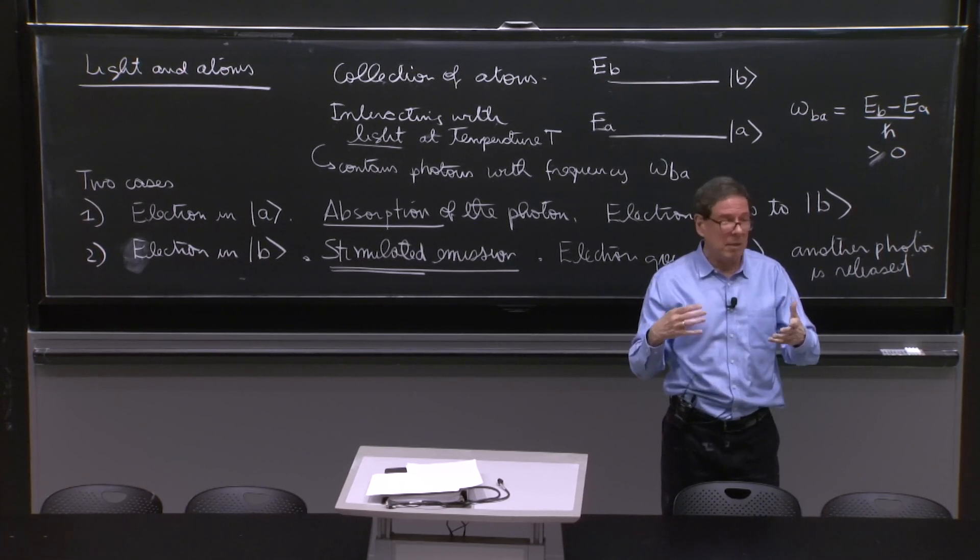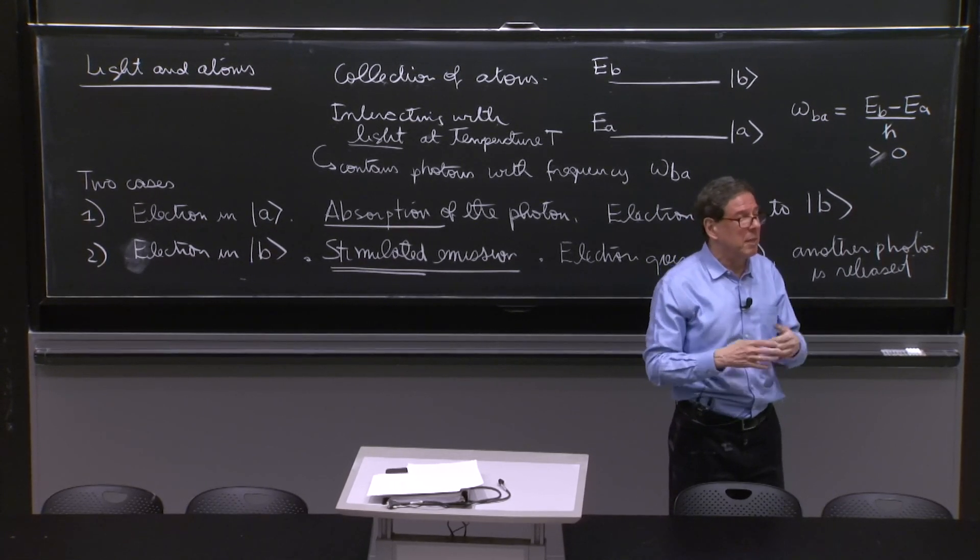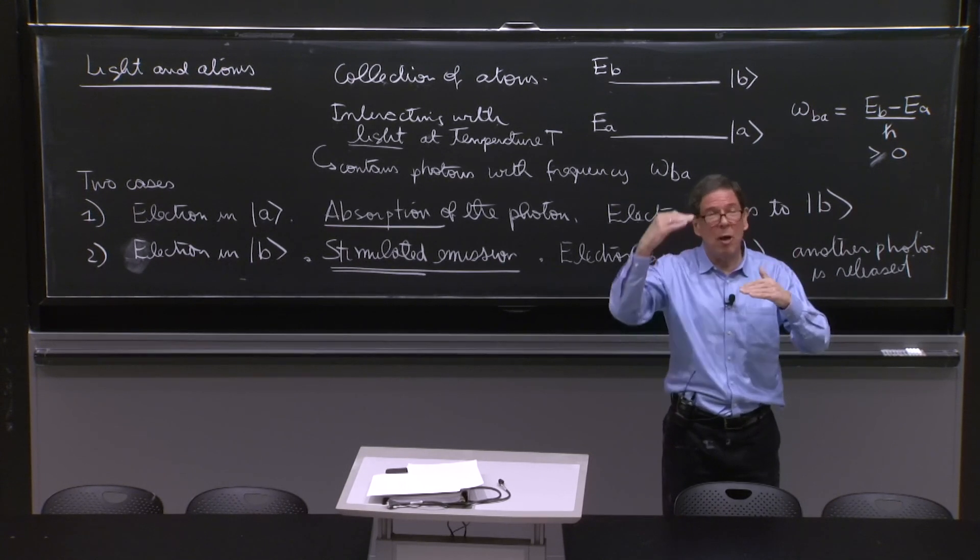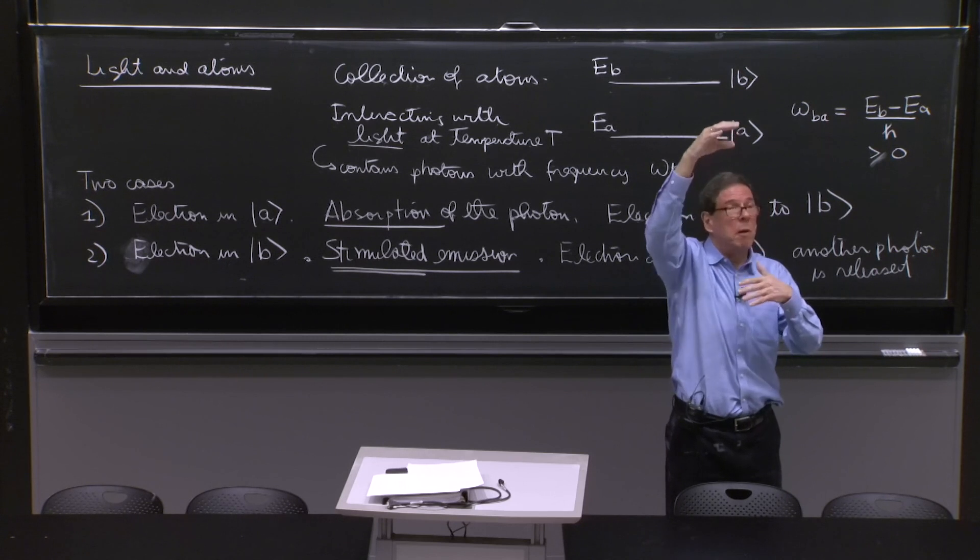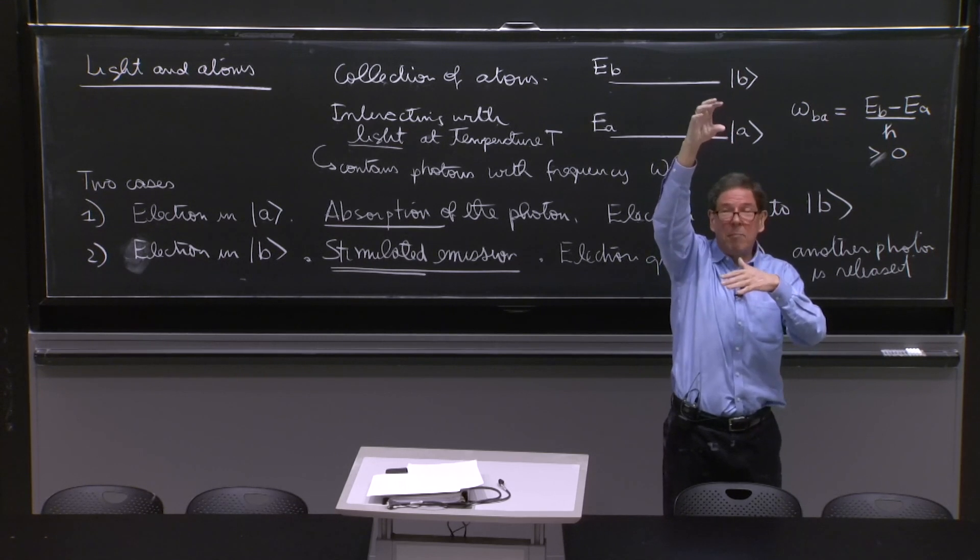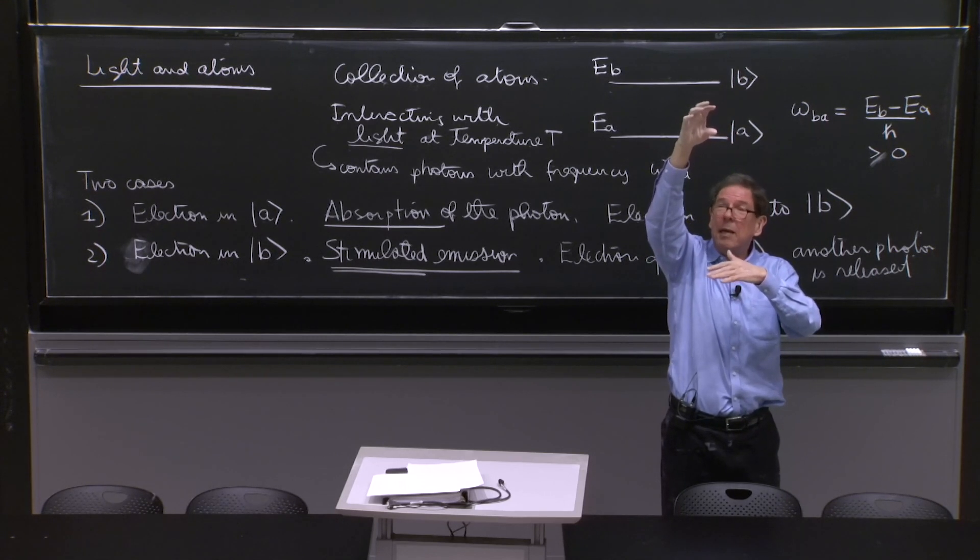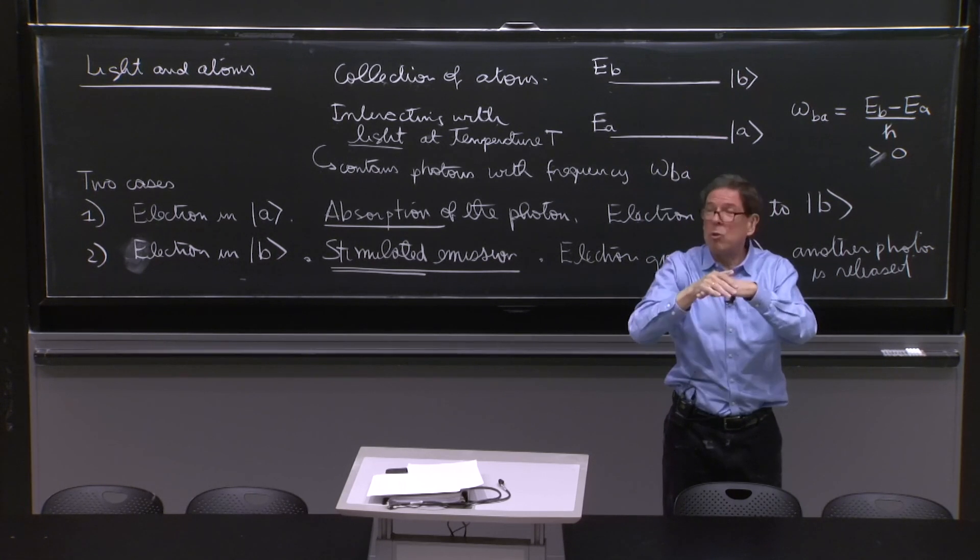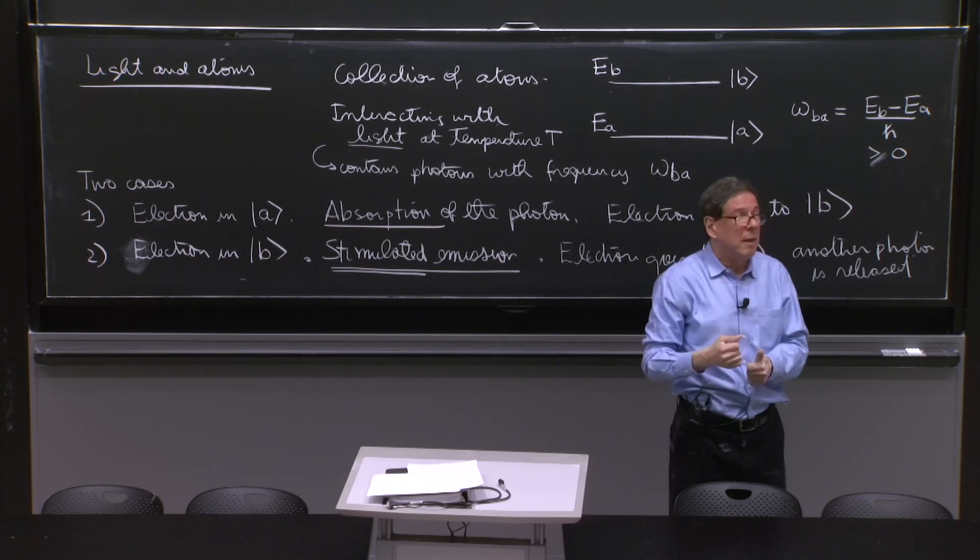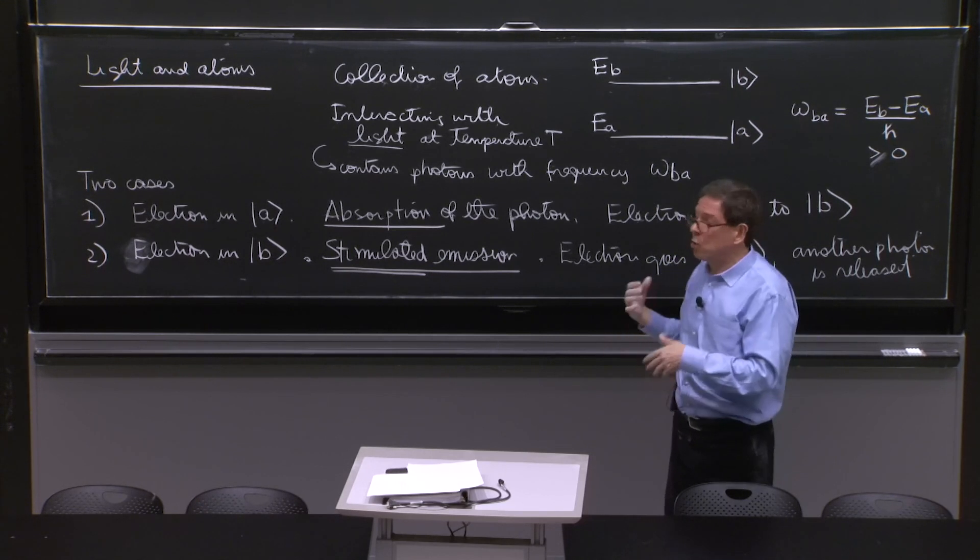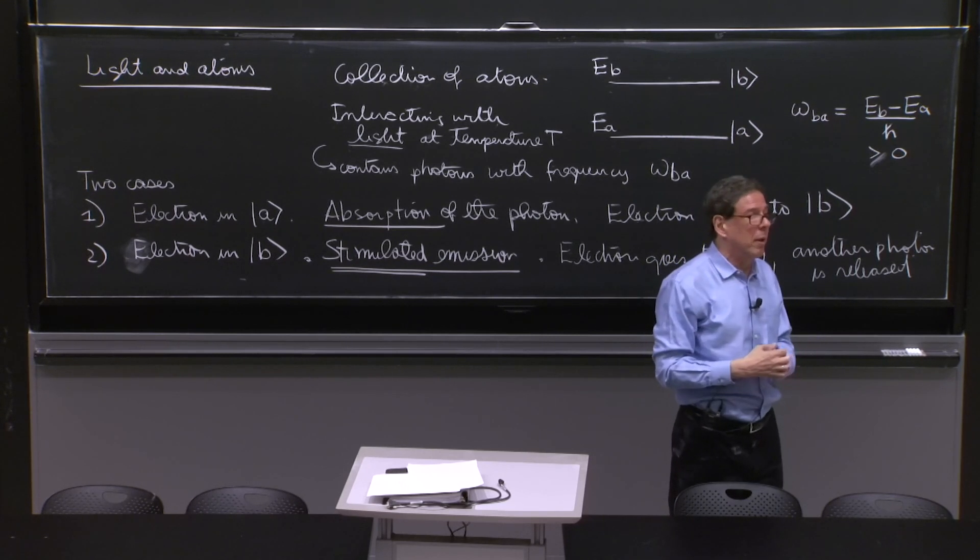People felt, and I think the paper of Einstein makes clear, that the intuition is that you have spontaneous emission, in which spontaneously by some kind of instability, the higher state goes to the bottom. And you have absorption. But then Einstein figured out that you couldn't achieve equilibrium in that way.